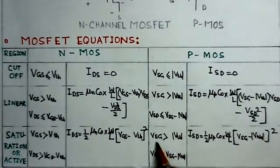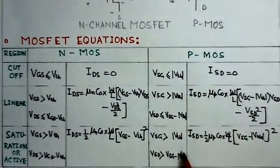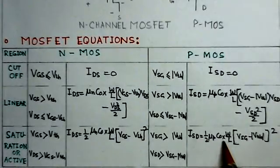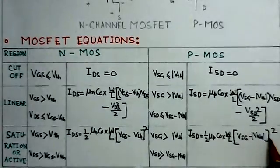And for the PMOS, VSD is greater than V threshold magnitude, VSD, and ISD the current is given half mu P COX W by L, VSD minus V threshold whole square.